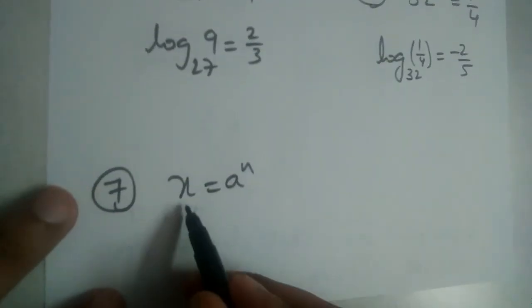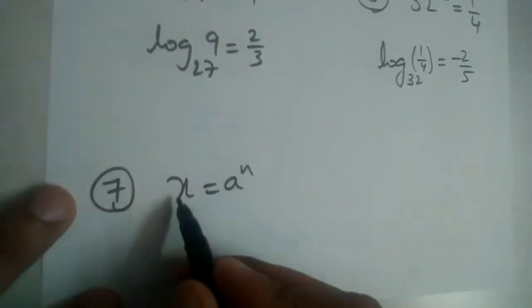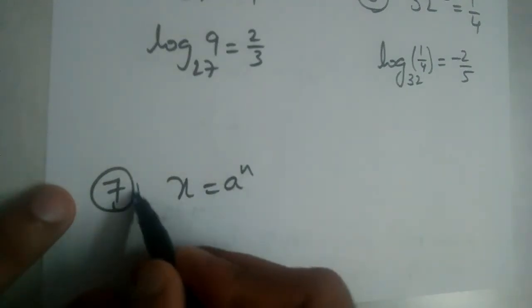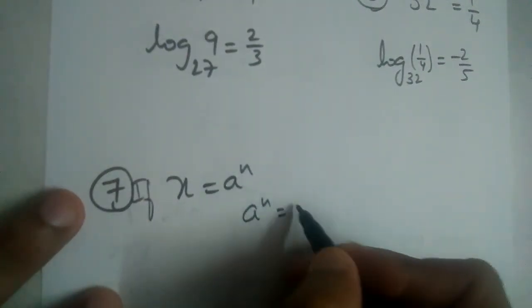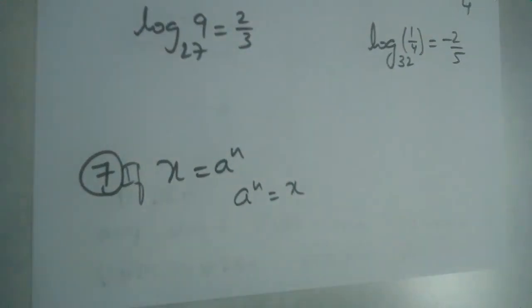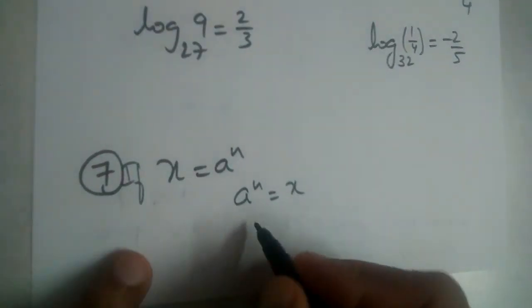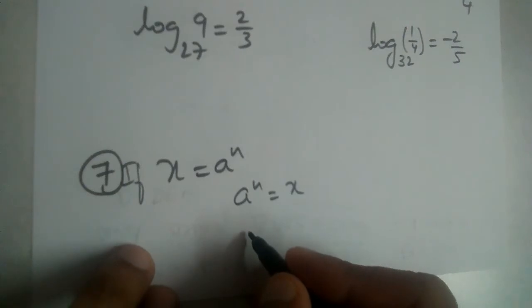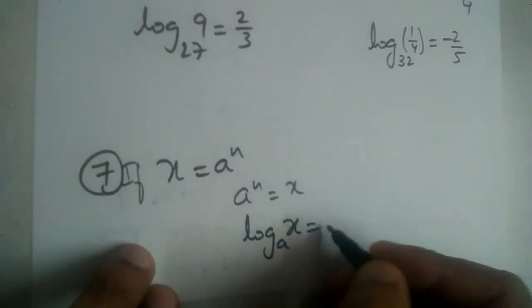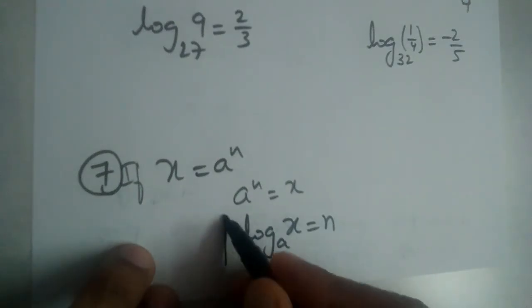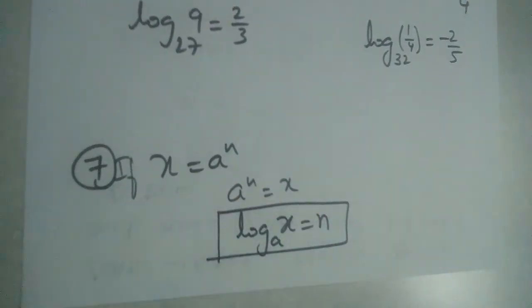And finally here, let us generalize everything. Let us generalize instead of numbers, let us take this as a formula. x is equal to a power n. If x is equal to a power n, or a power n is equal to x, let us write this in log form. So this will be equal to how much? Log base a, x is equal to n. So we can take this as a formula.